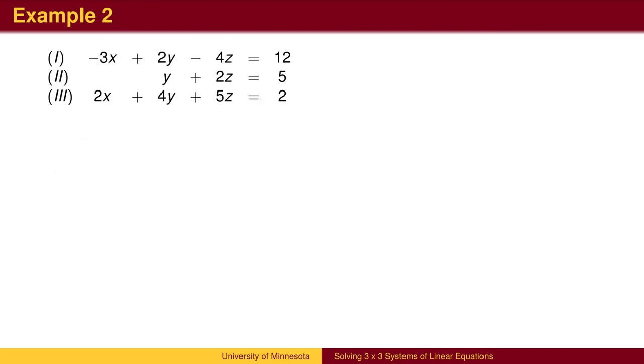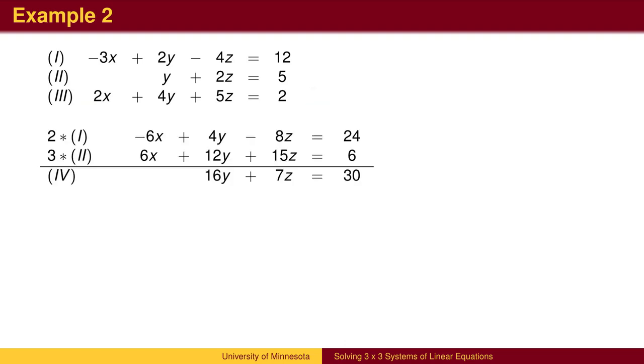Here is a second example. We have a head start since the second equation has already eliminated the x. We can combine the first and third equations to eliminate x again. Multiply equation 1 by 2 and equation 3 by 3. Add them to eliminate x to get equation 4.